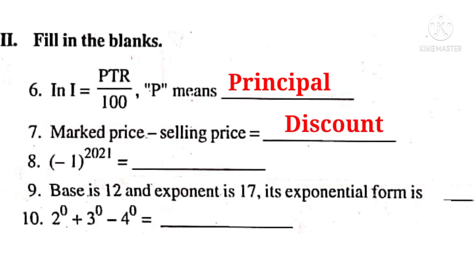Number 8: (−1) whole power 2021. Observe that 2021 is an odd integer, so the answer is always minus 1. If it were an even integer, it becomes plus 1. Number 9: Base is 12 and exponent is 17. Its exponential form is 12 power 17.